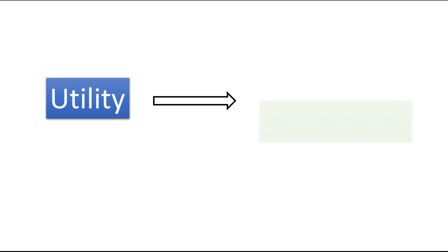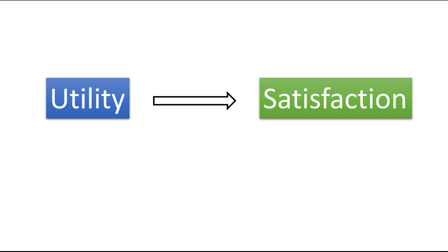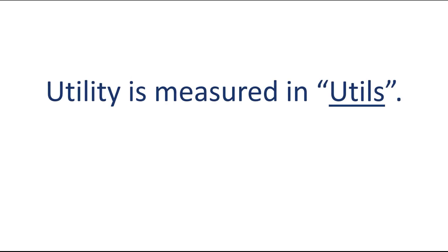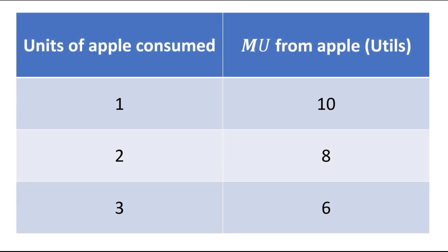Utility means satisfaction. In simple terms, utility means satisfaction. The concept of utility is measured in utils. We can understand this concept with the help of this table. In column one we can see units of apple consumed, and in the second column this is marginal utility from apple in terms of utils.